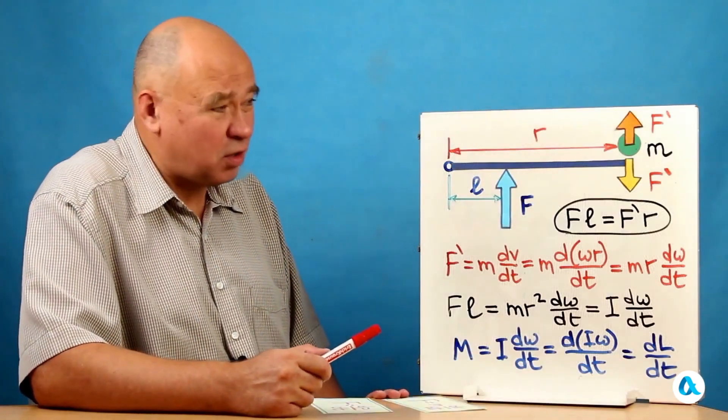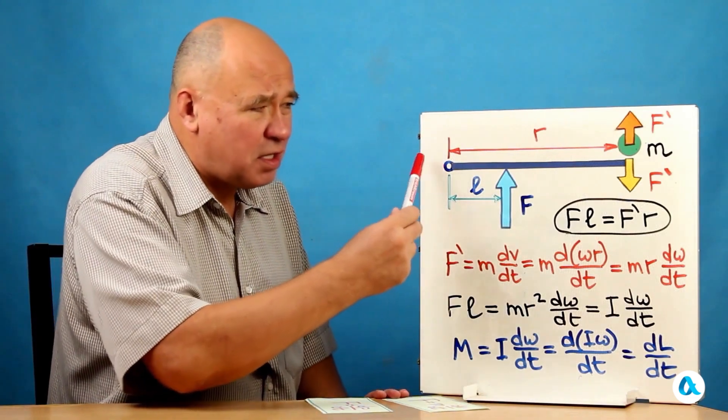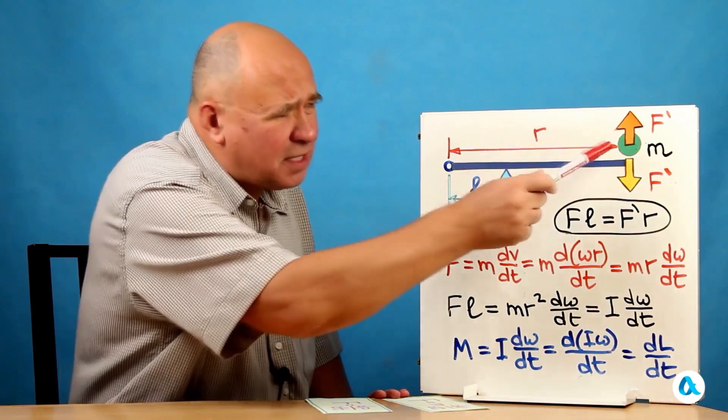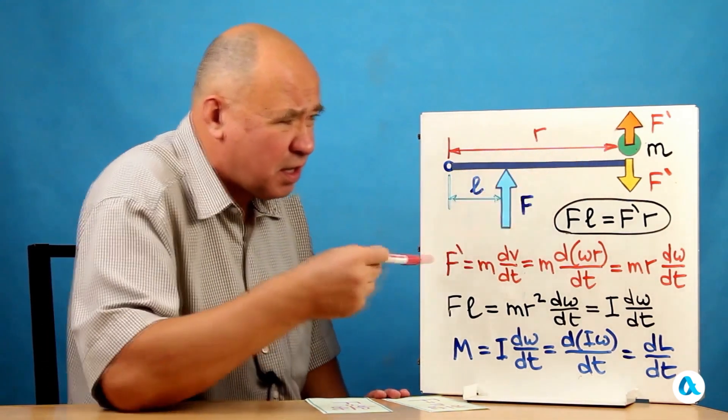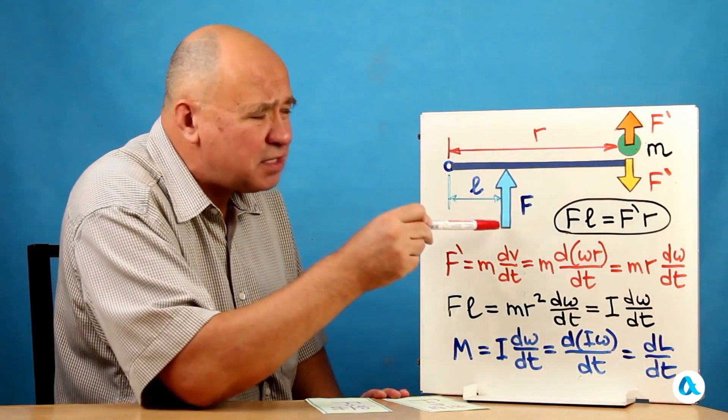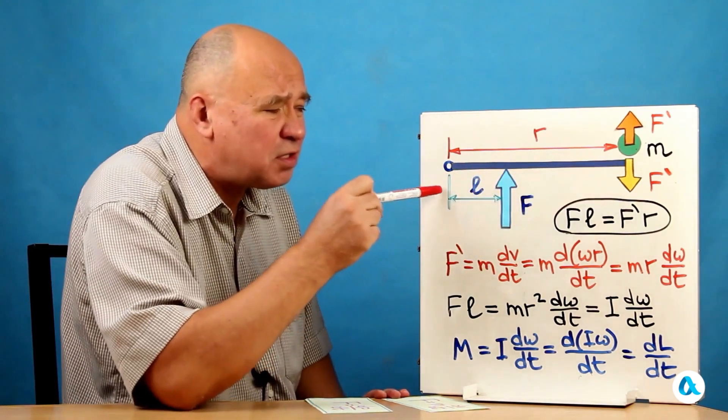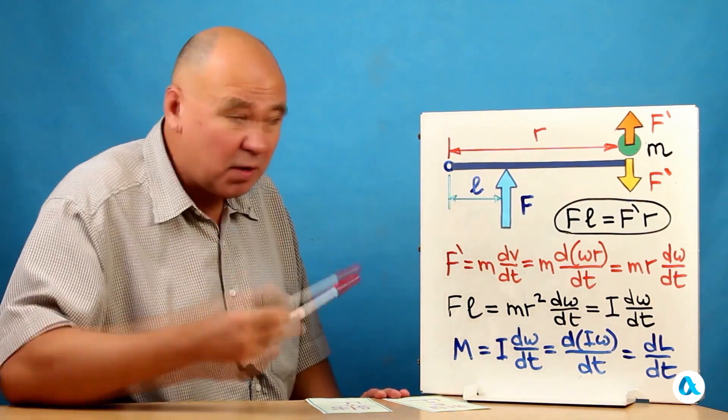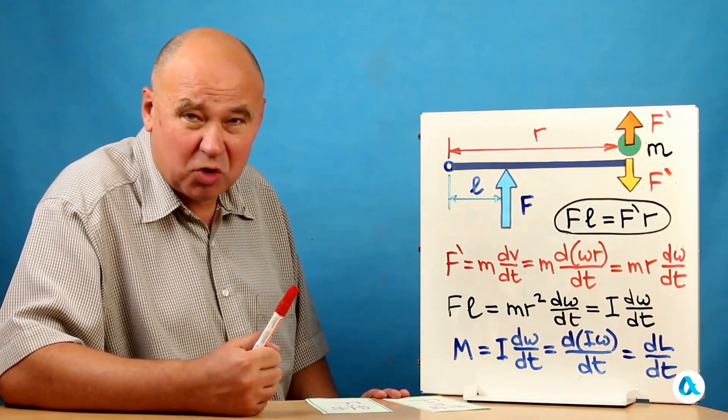With this goal in mind, we will consider a maximally simplified model. Let a weightless rigid lever be attached to the axis on which a mass M is fixed. I have denoted the arm of the weight by the letter R. Additionally, a force acts on the lever, but it is applied not at the location of the weight, but at another point. I denoted the arm of the force F with the letter L. And since the lever is weightless, we have the first condition.